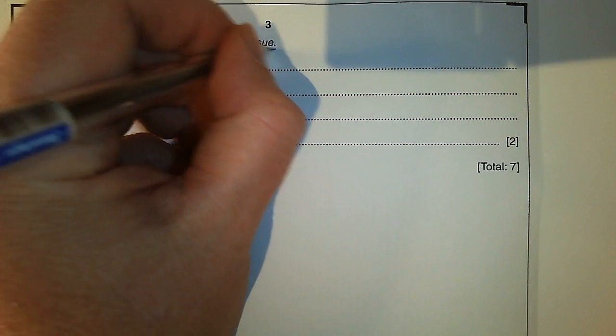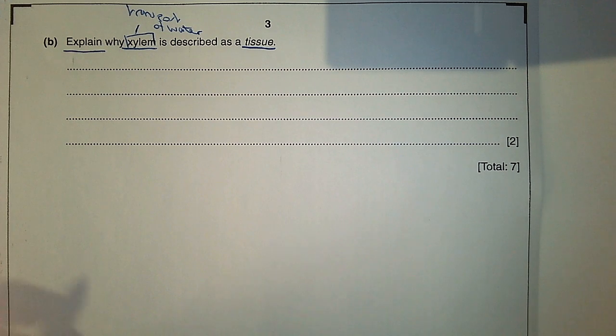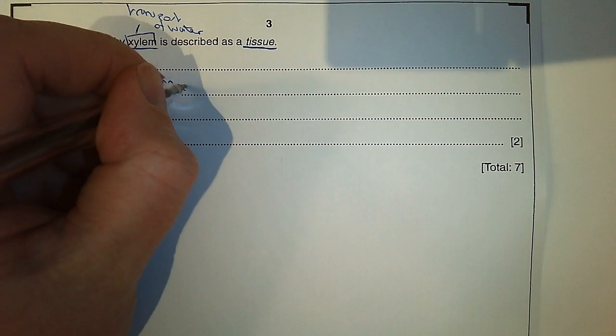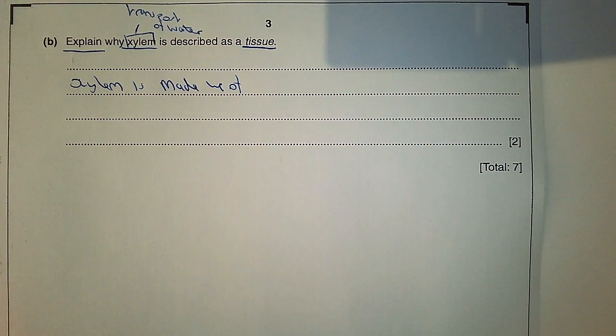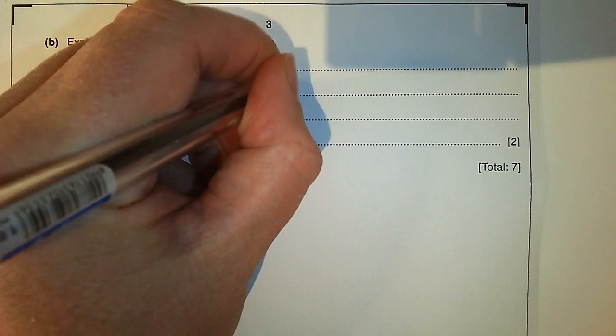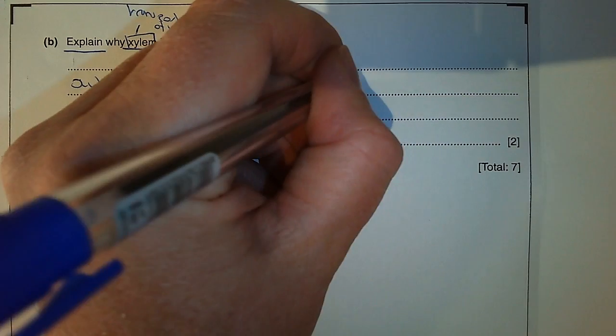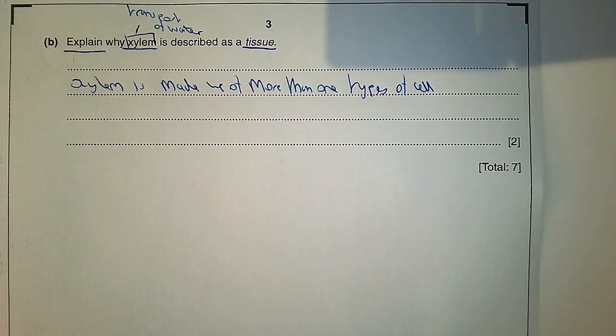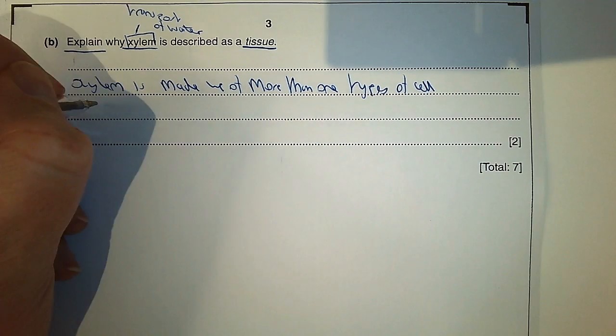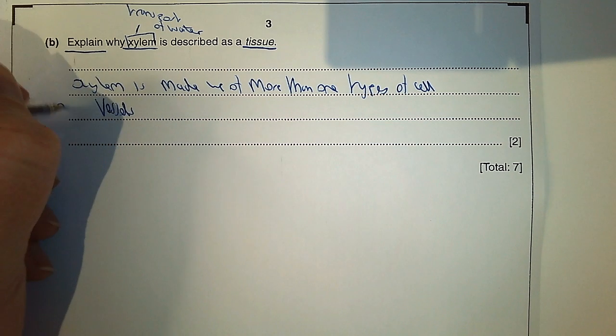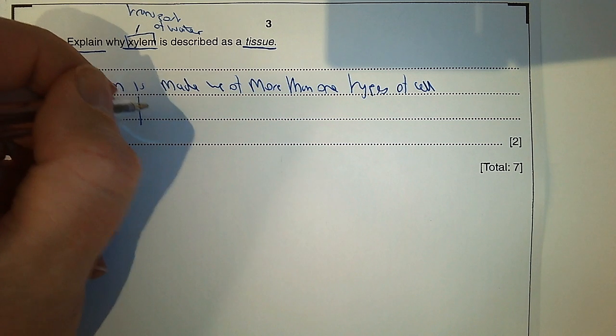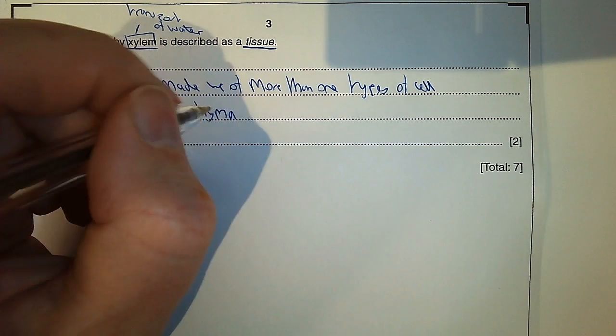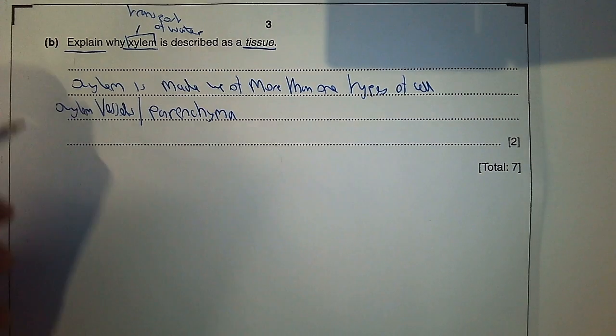We're going to say why it's described as a tissue. First of all, xylem is made up of more than one type of cell. So it's made up of the xylem vessels, it's made up of parenchyma. So it's the idea that it's made up of more than one type of cell.